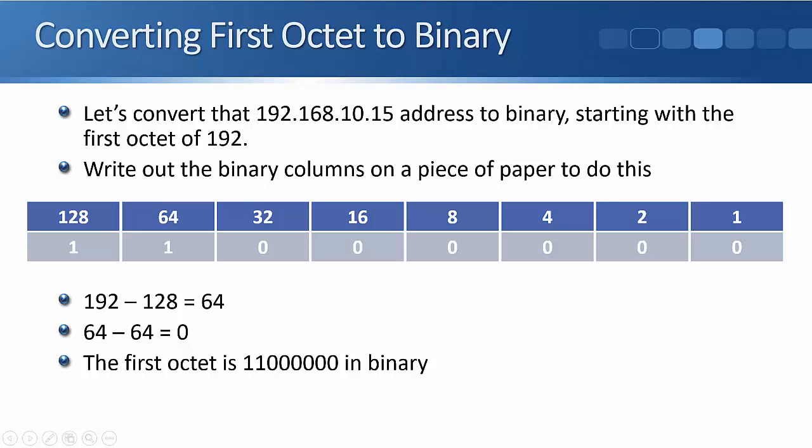To do a final check, add these digits together. Add 128 plus 64. When we add them together, it comes up to 192, which is the value we wanted, so we got that right. When you're working this out, if you ever get anything that does not end with a 0 value, you know you've made a mistake, so go back and try it again. That was our first octet.